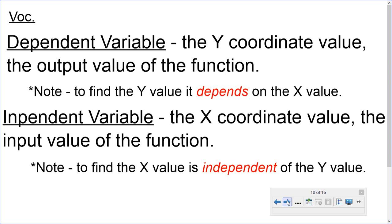Independent variable. The x-coordinate value. The input value of the function. Note, to find the x value, it is independent of the y value. In other words, the x value doesn't have to do anything to the y value if it doesn't want to. It's completely independent. But, the y value definitely needs the x value to survive.